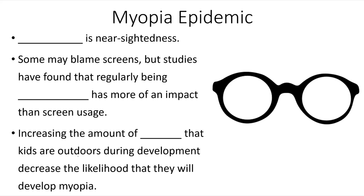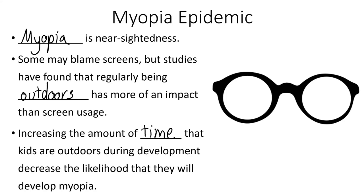Another epidemic is the myopia epidemic. Myopia is nearsightedness. Some blame screens, but studies have found that regularly being outdoors has more of an impact than screen usage — and being outdoors is a positive. Those who are able to be outdoors more often are less likely to need corrective lenses or to have myopia than those who spend the majority of their time, especially during childhood years, indoors. So it's not that screens are to blame, but being indoors for excessive periods of time makes it more likely for an individual to become nearsighted. Increasing the amount of time that kids are outdoors during development decreases the likelihood that they will develop myopia.